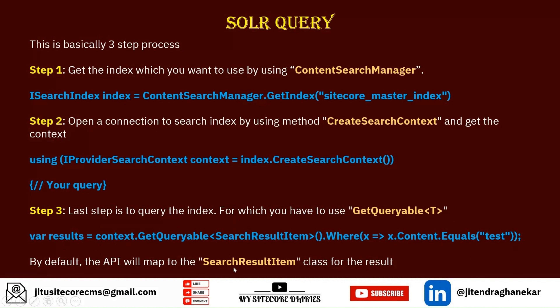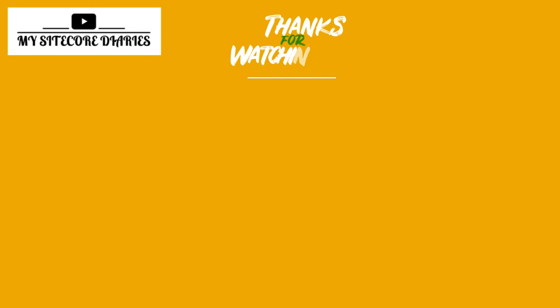These are the three steps to follow. By default, the API will map the SearchResultItem class for the result. First, get the index using ContentSearchManager. Second, open the connection using the CreateSearchContext method. Third, query it using GetQueryable — SearchResultItem is your output model. This is how you can query Solr.